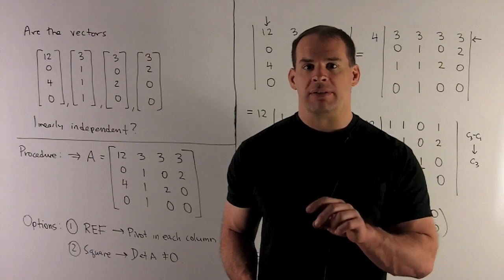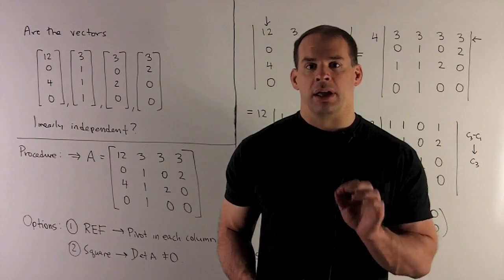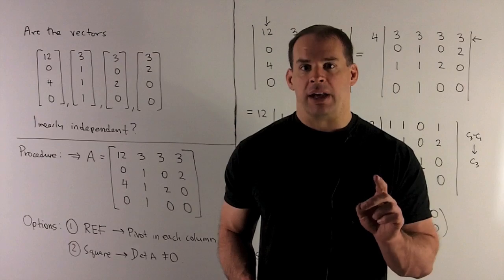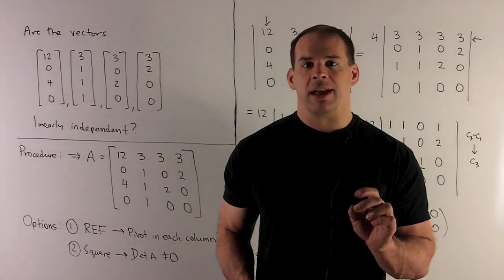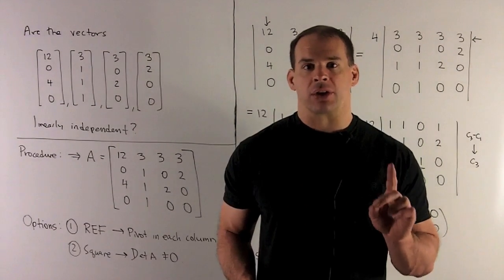Then we check and see if there's a pivot in each column. If so, then we're linearly independent. If not, we're linearly dependent, and then there's going to be a relation among our vectors.